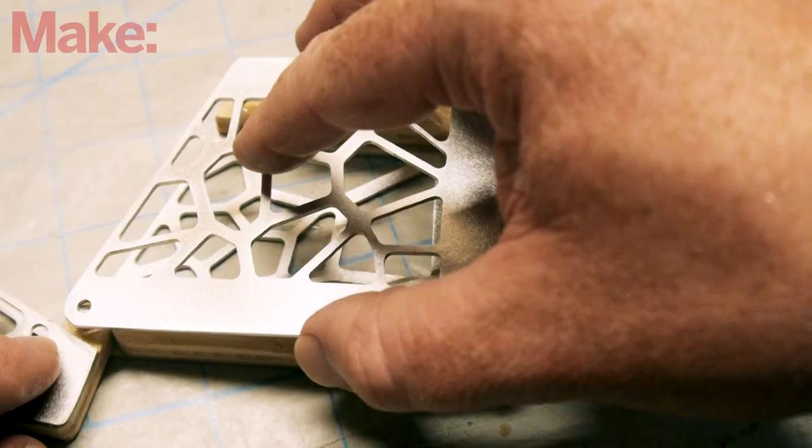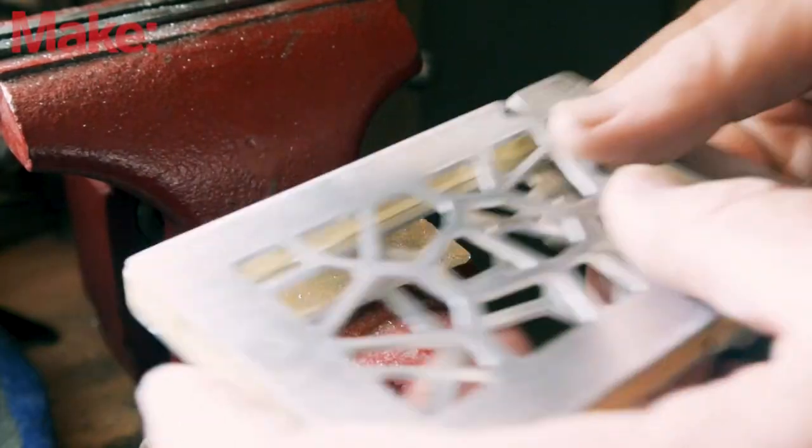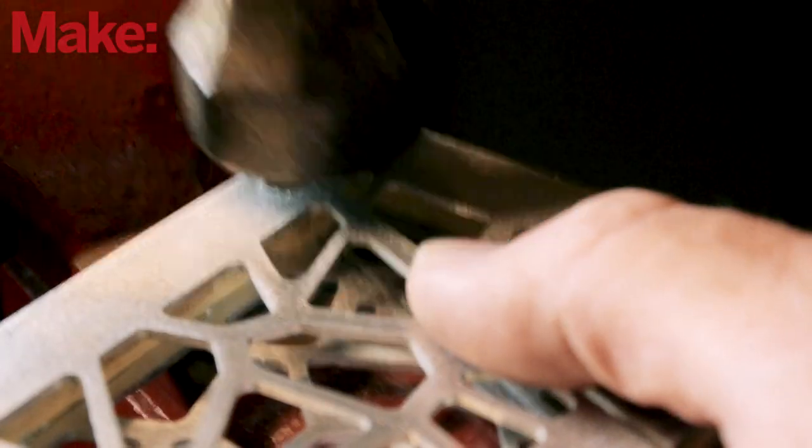Once that's set, I glue the top plate together. Finally, once the epoxy is cured, I use the anvil of my bench vise to pin the hinge pin into a rivet.